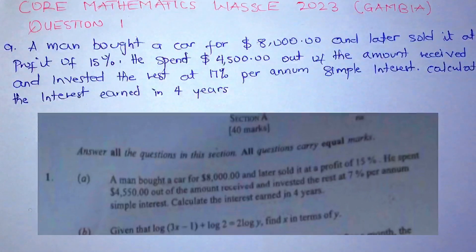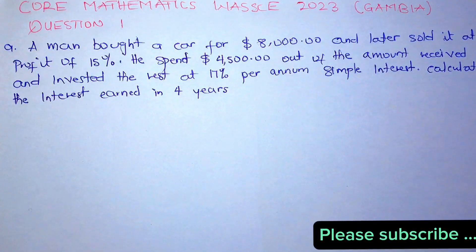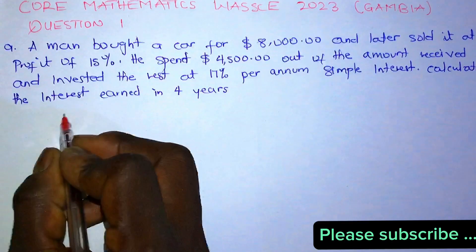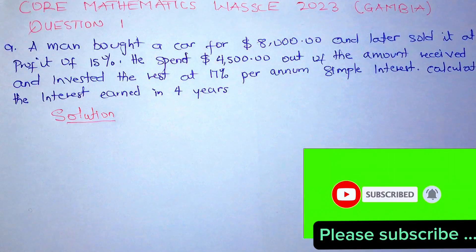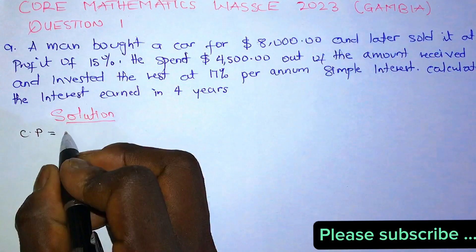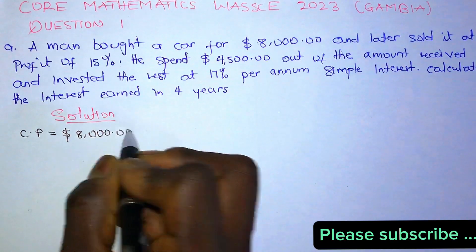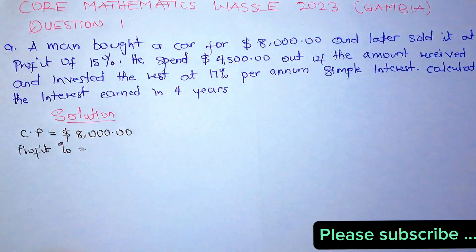Question one: a man bought a car for eight thousand dollars and later sold it at a profit of 15 percent. He spent four thousand five hundred dollars out of the amount received and invested the rest at 17 percent per annum simple interest. Calculate the interest in four years. So the solution: the cost price given was eight thousand dollars, and the profit percent was 15 percent.